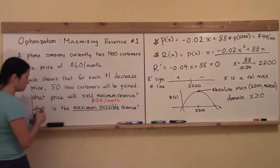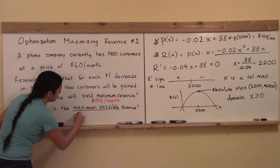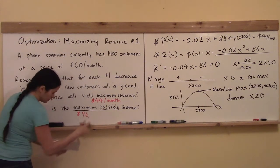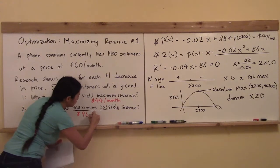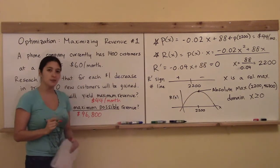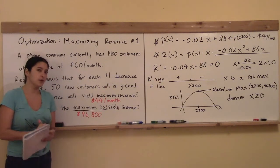And so the answer to that question is, what is the maximum possible revenue, the total possible revenue, $96,800 is my maximum possible revenue.